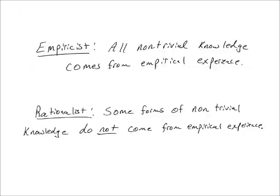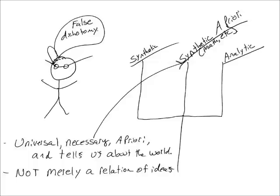In the Critique of Pure Reason, Kant shows that Hume's fork is a false dichotomy. There is a third type of knowledge that's universal, necessary, and a priori, but it's not merely a relation of ideas — the predicate is not contained in the subject. It's not merely a definition game; it actually tells us about the world, or is at least what is presupposed for experience of the world. Kant calls this knowledge synthetic a priori. It's the knowledge that comes from the spectacles, so to speak — the middle column in this picture.